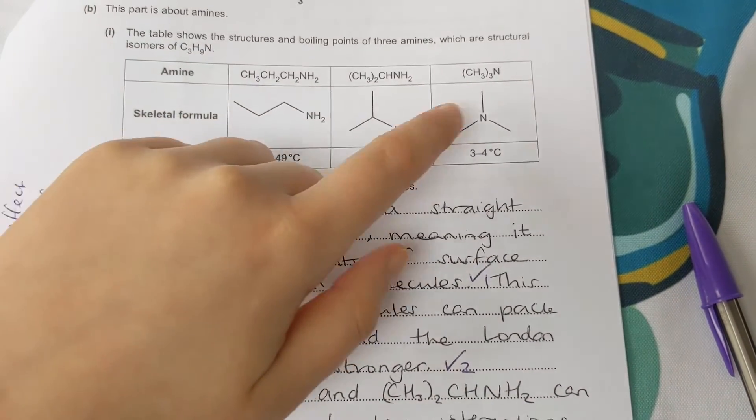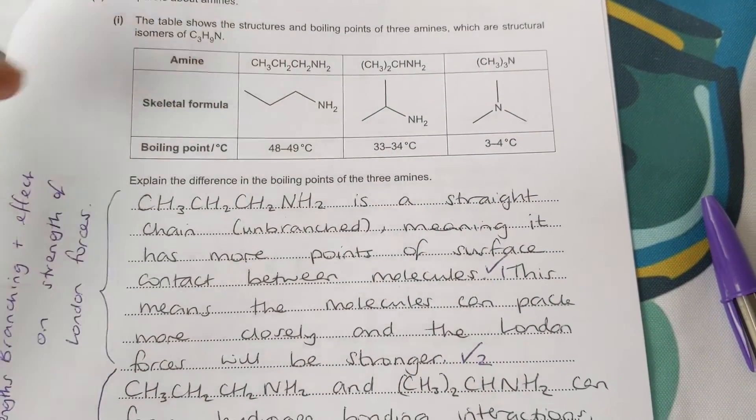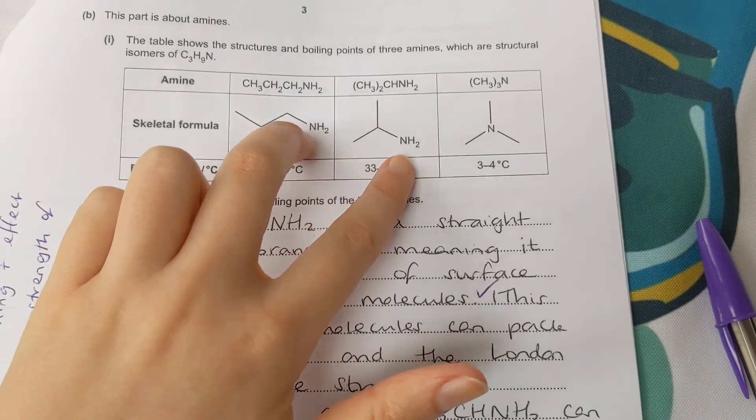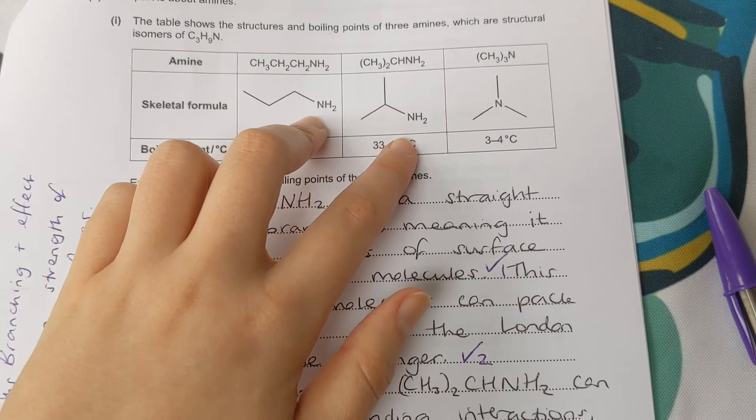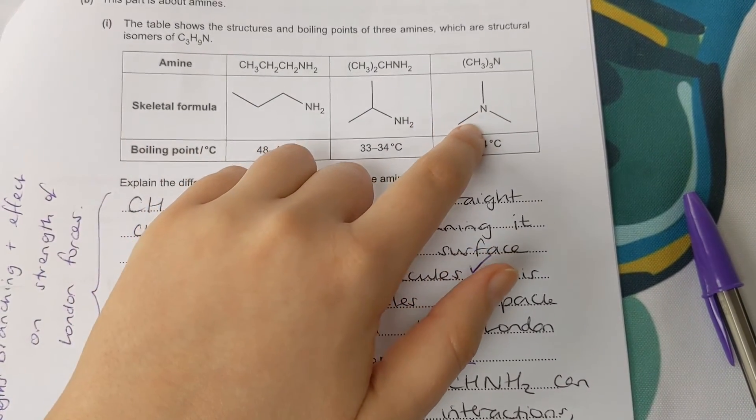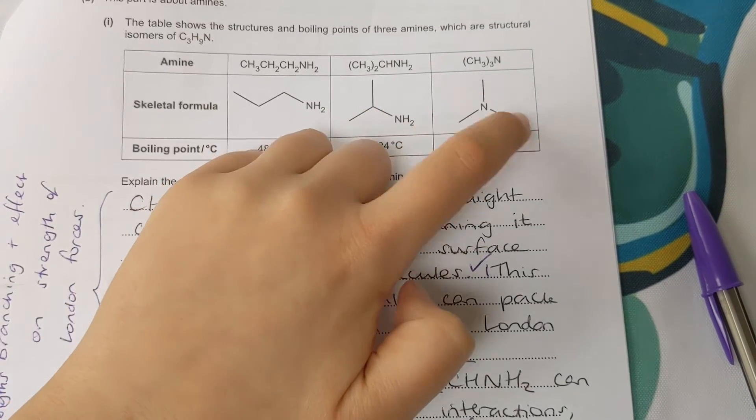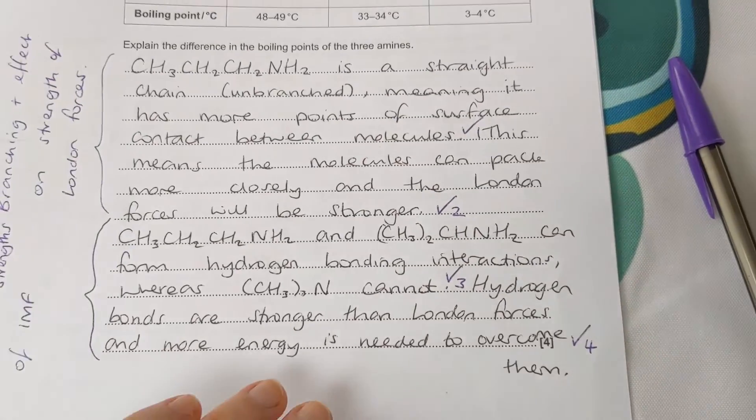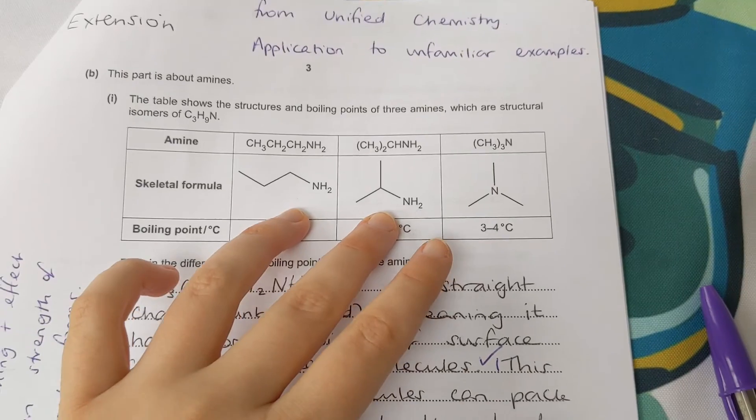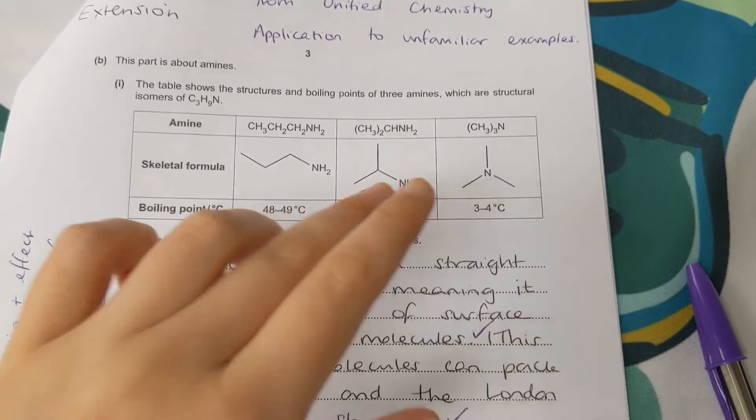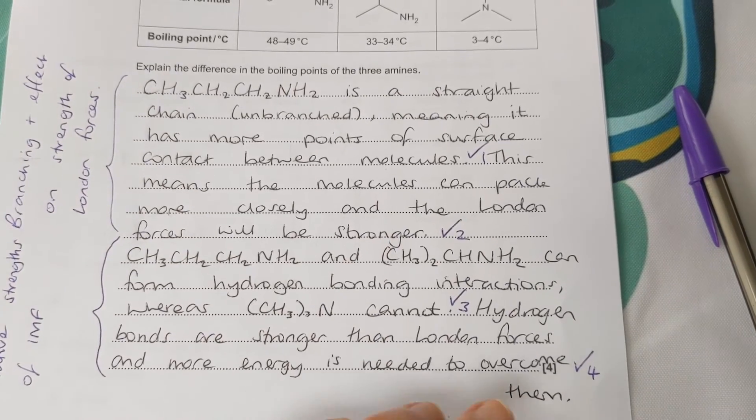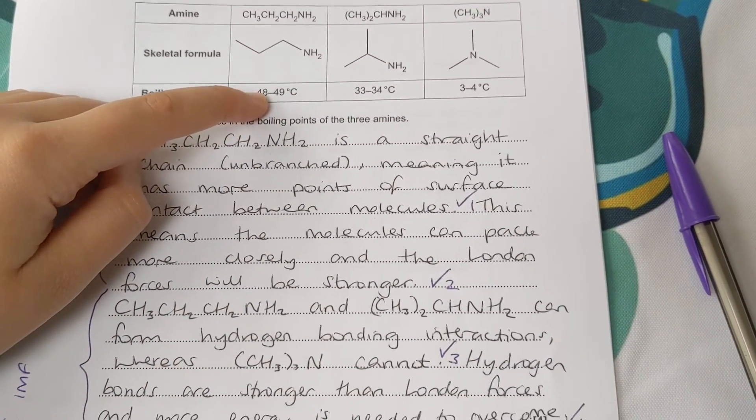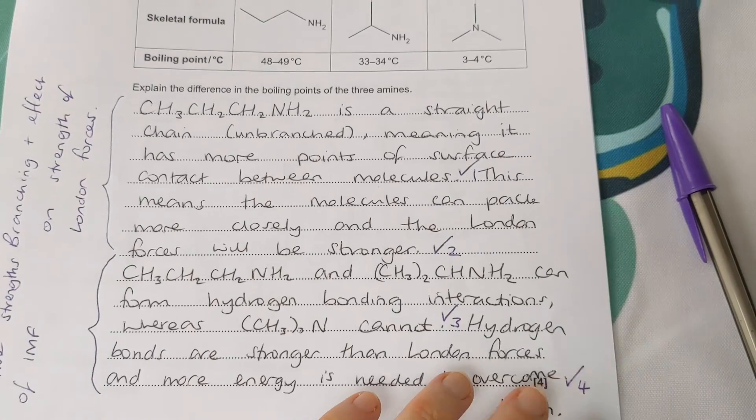However, since they're amines, the nitrogen is a highly electronegative atom with a lone pair. It has a neighbouring hydrogen—well, these two do. That means these two are capable of forming hydrogen bonding interactions. This one isn't. It doesn't have a neighbouring hydrogen atom. These are methyl groups. It has neighbouring carbons but not a neighbouring hydrogen. So the next thing we talk about is that these two can form hydrogen bonding interactions. This can't because it doesn't have a neighbouring hydrogen. Therefore, more energy is needed to overcome the forces in this molecule compared to the others. And we mention that hydrogen bonds are stronger than London forces.